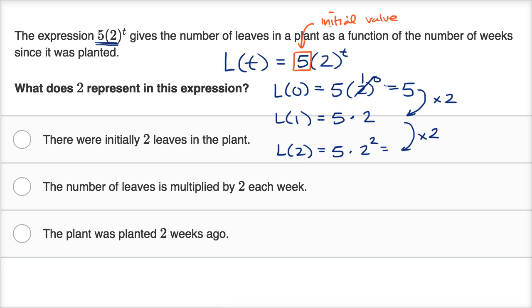And that's why this number right over here, which is what the question is about, the two, this is often referred to as the common ratio. Common ratio. Because between any two successive weeks, the ratio between say week two and week one is two. Week two is double week one. Week one is double week zero.